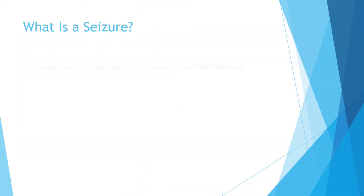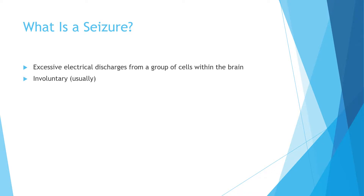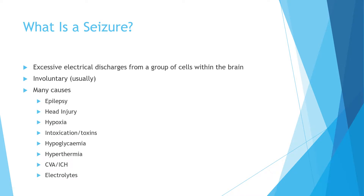What's a seizure? A seizure is loosely described as an excessive electrical discharge from a group of cells within the brain. Seizures are in the majority of cases involuntary. There are many causes including epilepsy, head injury, hypoxia, intoxication or ingestion of toxins, hypoglycemia and diabetic ketoacidosis, hyperthermia, cerebrovascular accident or intracranial hemorrhage, and electrolyte imbalances. We'll mostly focus on epilepsy in this presentation.